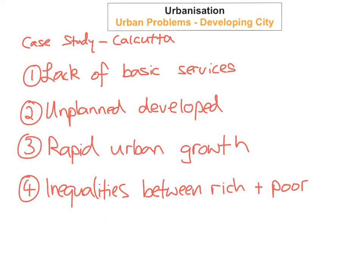Another problem in Calcutta because of urbanisation is that crime has increased dramatically. Because some people live in such a small area and there's such a gap between the rich and the poor, a lot of people are now committing crime — sometimes in order to get money to survive and feed their families. Crime is definitely a huge problem in Calcutta.